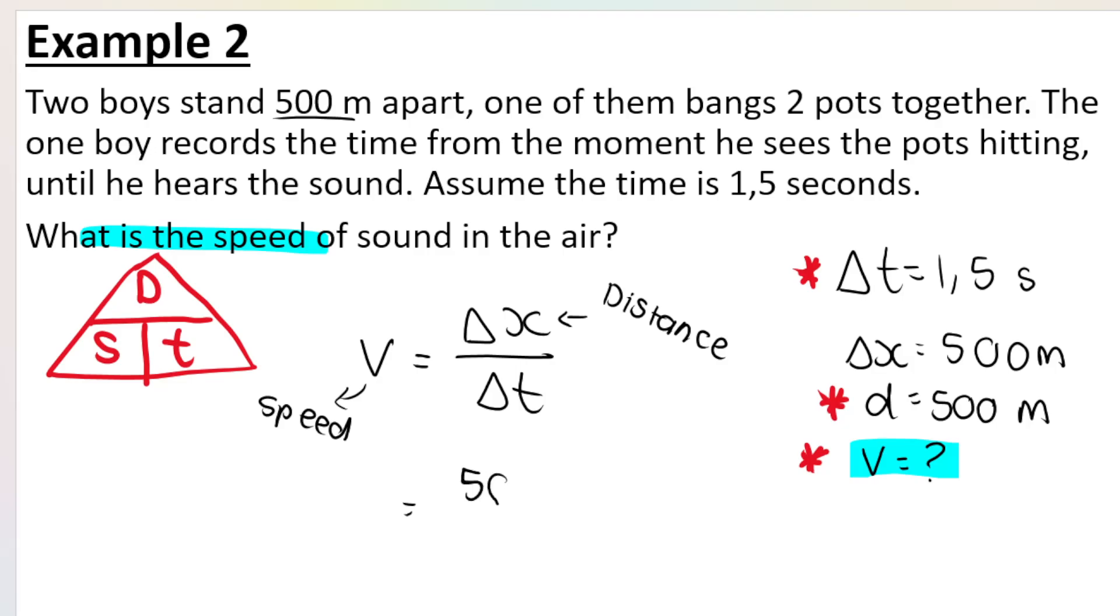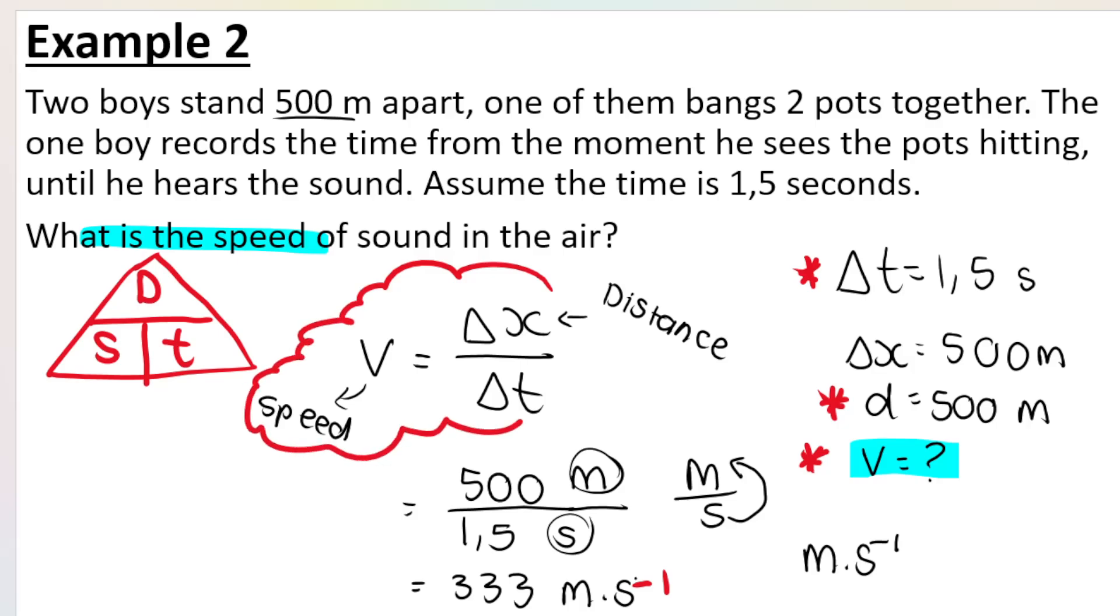So if I have the distance as being 500 meters and my time as being 1.5 seconds, I can say 500 divided by 1.5 and I get a speed of 333 meters per second. How did I know that my unit will be meters per second? Well, my unit for distance is in meters, my unit for time is in seconds. Meters divided by seconds is meters per second. So just be aware, grade 10s, that you can use this formula speed equals distance divided by time within the longitudinal waves and sound wave section.